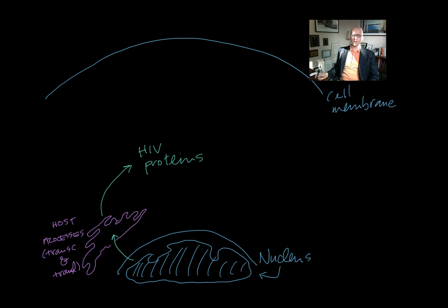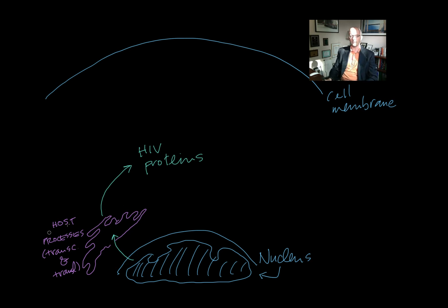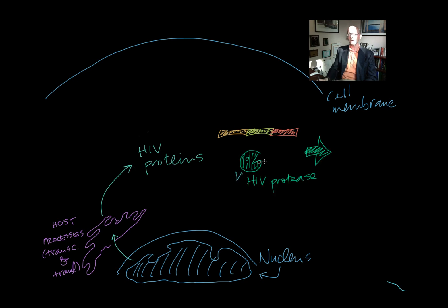Now we have a cell, and I'm sure you recognize that this is the nucleus. Now that the virus's DNA is integrated into the genome, the natural host processes just take over. You have transcription and translation — this is the Golgi, of course — and the ultimate result is HIV proteins. But not just any HIV proteins: what you have is a polyprotein. This is analogous to pro-opiomelanocortin, POMC — a polyprotein that needs to be cleaved in order to function. HIV's answer to this is the HIV protease.